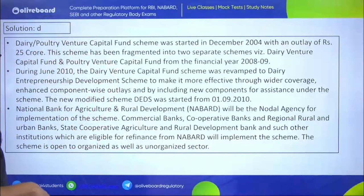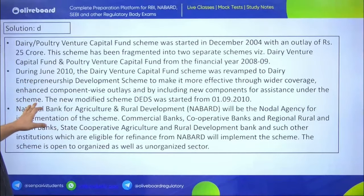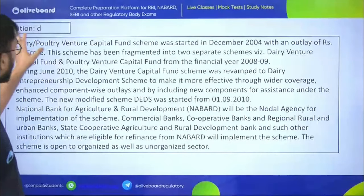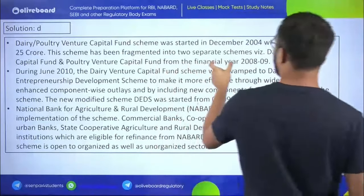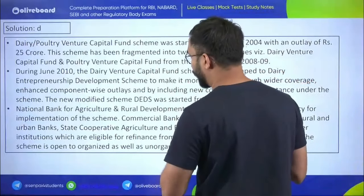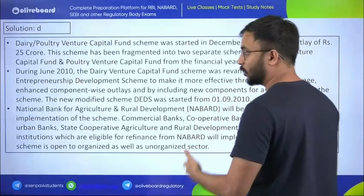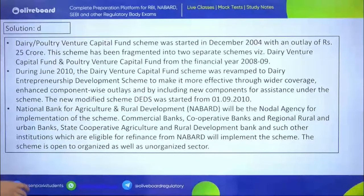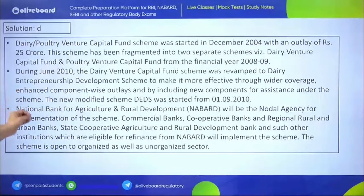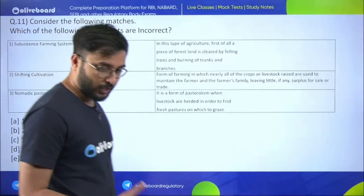The Dairy Entrepreneurship Development Scheme earlier had two parts — Dairy Venture Capital Fund and Poultry Venture Capital Fund. In financial year 2008-09, those two components became separate schemes. NABARD is the nodal agency for this scheme.